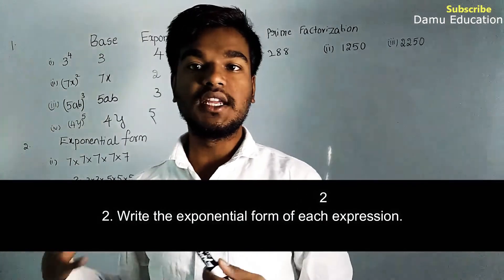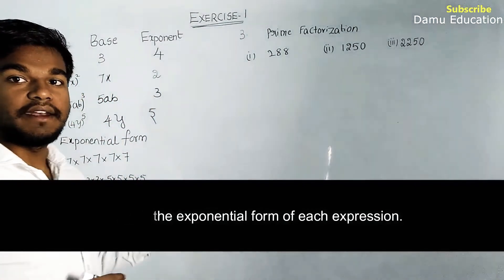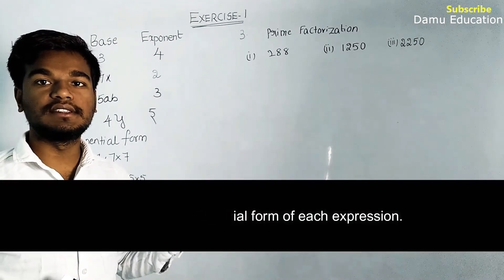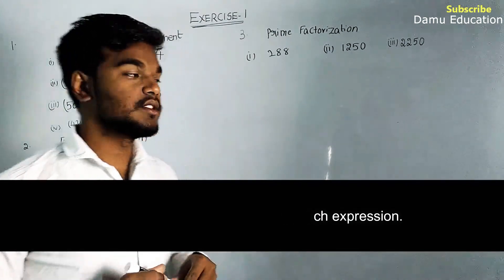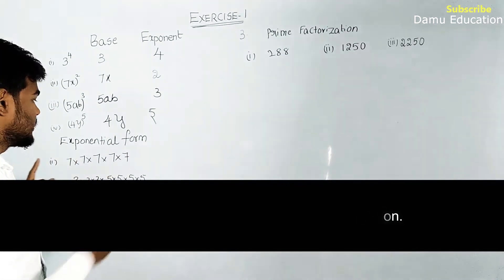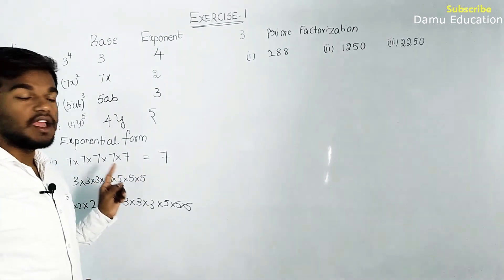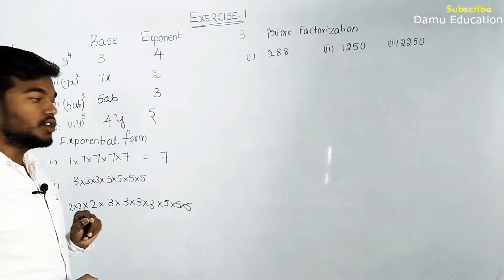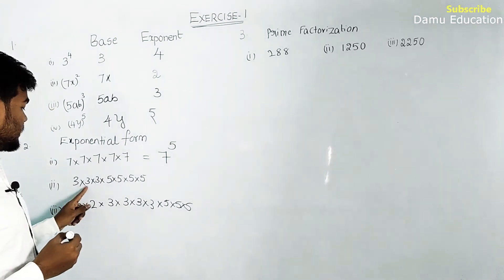The second question asks us to write the given expression in exponential form. Whatever the repeated number is, we write it once as the base, and count how many times it appears in multiplication — that count becomes the exponent. For example, 7 × 7 × 7 × 7 × 7: the base is 7 and it appears 5 times, so it is written as 7 to the power 5.